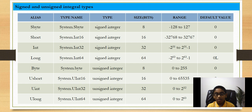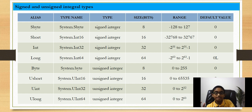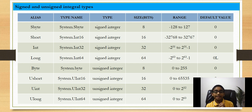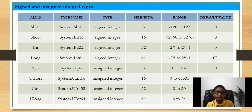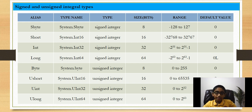Next we have a column for size in bits. Short takes up 16 bits, long takes 64 bits, byte takes 8 bits, and sbyte takes 8 bits as well. Then we have a column for range. For example, byte can store a value from 0 to 255.